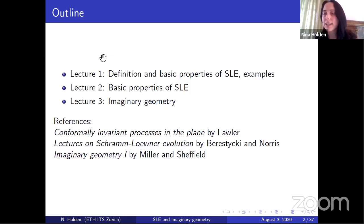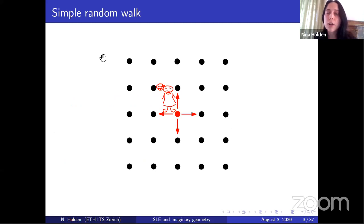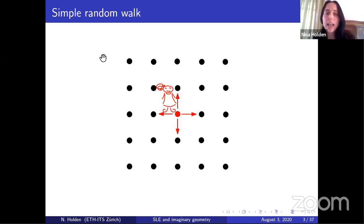He will be sitting in the chat, and he might also interrupt me if something should be addressed in front of everyone. So, SLE curves are curves that arise as the scaling limit of discrete models. I will show you a few examples of this, but first we will be looking at an even more well-known scaling limit result, which is that the simple random walk is converging to Brownian motion.